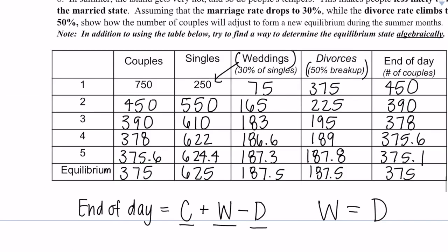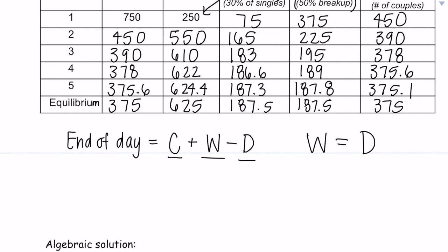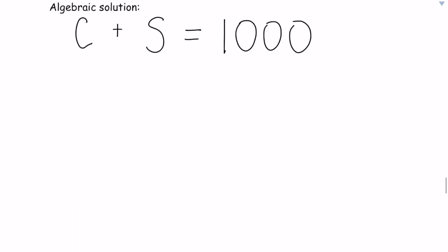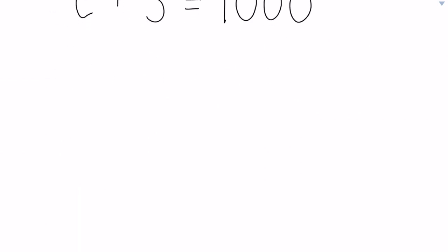So let's talk about the algebraic solution here. Let's list out some equations that we know to be true. We know that couples, which I will represent as C, plus singles equals 1,000. That is something that is always true. 750 plus 250 is always 1,000. 450 plus 550 is always 1,000. This is always 1,000. We also know that the rate of weddings is 0.3, which is 30%, times our single amount. And our amount of divorces is 50% of our couples that we have.